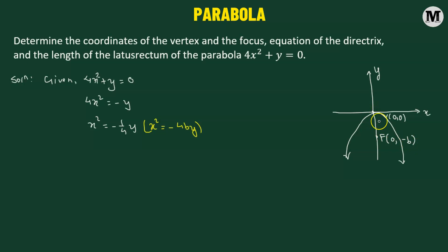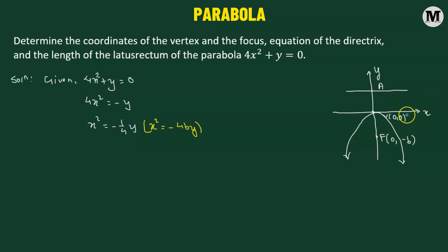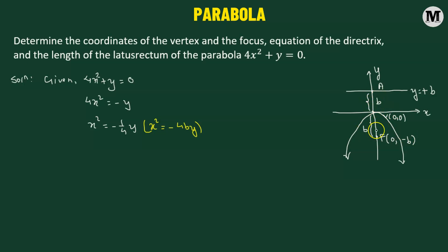We consider another point on the axis of the parabola such that a line passing through it and parallel to the x-axis — that is, perpendicular to the axis — becomes the directrix. Any line parallel to the x-axis is given by y equals positive p. Point a is chosen so that its distance from the vertex equals the distance of the focus from the vertex, both equal to p. That is how we know the equation of the directrix is y equals p.